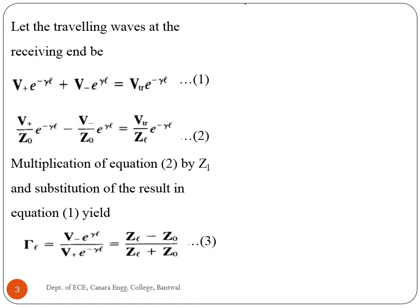To find the equation of the transmission coefficient, consider the length of the transmission line as L. Let the traveling waves at the receiving end be given by equation 1. Let the sum of the incident wave and the reflected wave equal the transmitted wave. Equation 1 can be rewritten as equation 2, which is the current equation of the traveling waves at the receiving end — representing the incident wave, reflected wave, and transmitted wave at the load end.